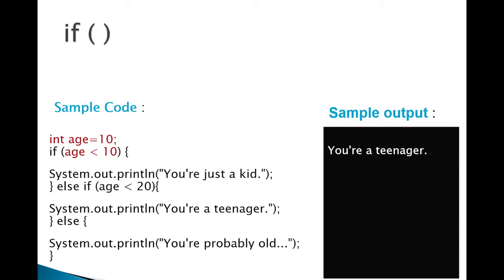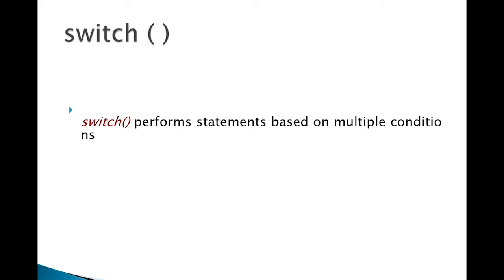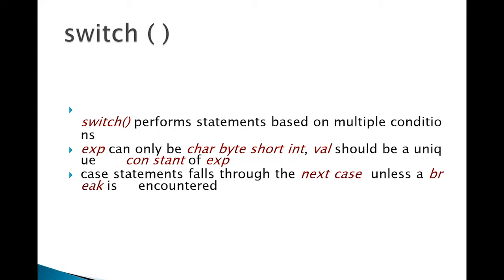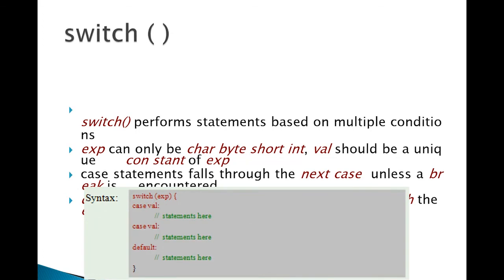Probably you're familiar with this already. Let's move on. Next we have switch. Switch performs statements based on multiple conditions. Expressions can only be char, byte, short, int. Value should be a unique constant of the expression. Case statement falls through to the next case unless break is encountered. Without a break, it won't stop. Default is executed if none of the other cases match the expression. Here's the syntax: you have switch and then your expression, and then the keyword case followed by your value or condition.